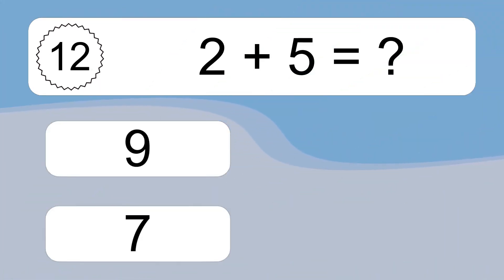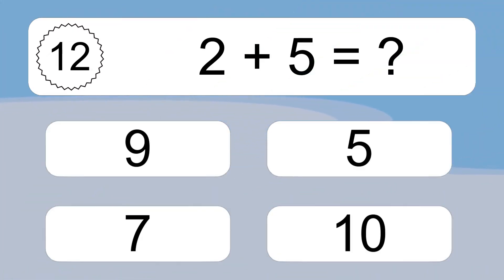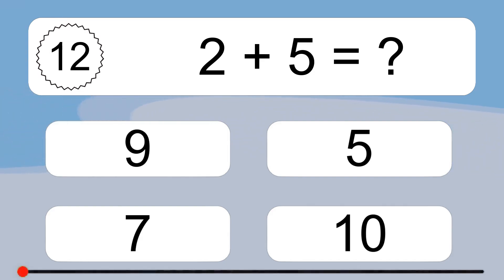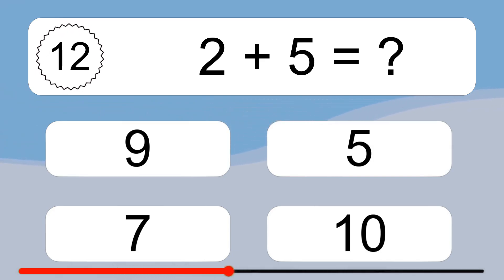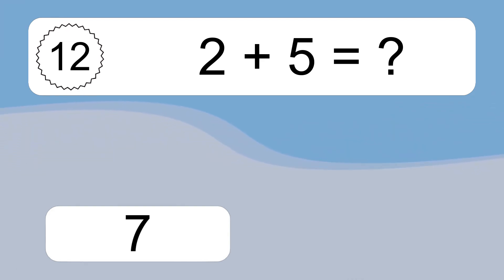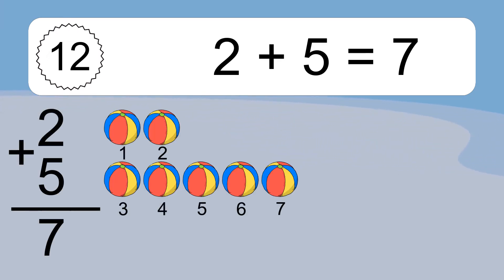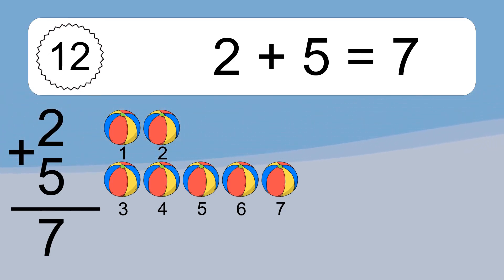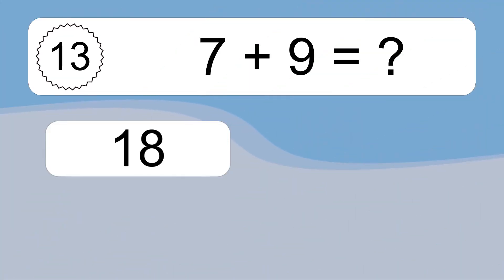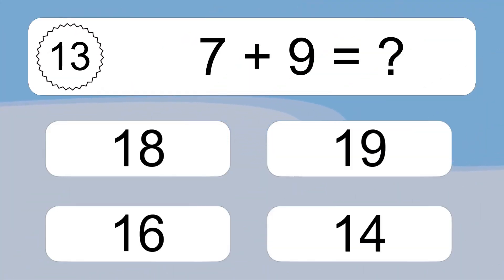2 plus 5 equals what? 2 plus 5 equals 7. Let's count it. 1, 2, 3, 4, 5, 6, 7.